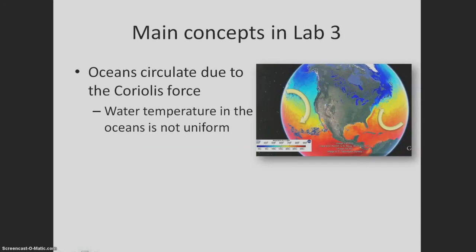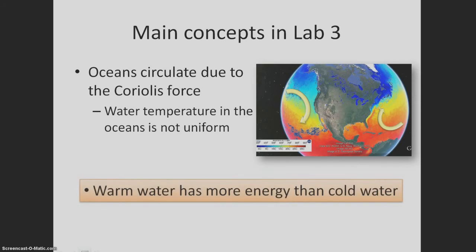The first is that oceans circulate due to the Coriolis force. This causes water temperatures in the oceans to not be the same everywhere. The second major concept is that warm water has more energy than cold water.